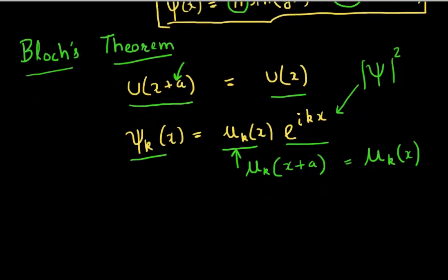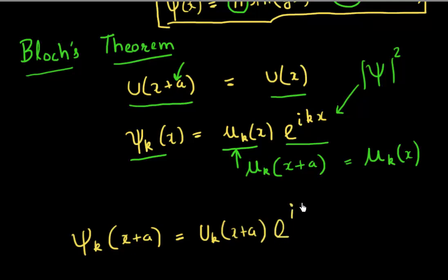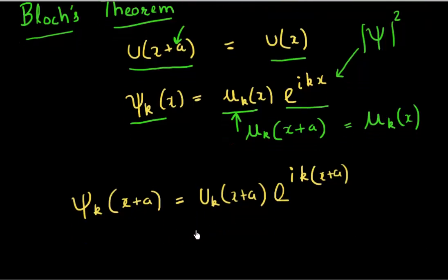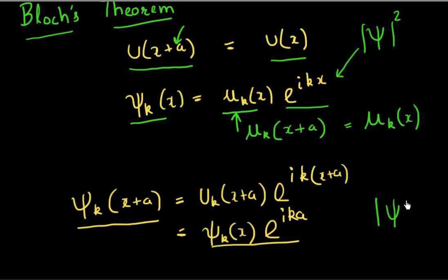Now I see that my ψ_k at a distance of x plus a would be given by u of k of x plus a and e to power i k(x plus a). Since this function has a periodicity of a, I could rearrange this term and essentially what I will get is ψ_k(x) times e to power ika. If I have this kind of functional dependence, what I can see is if I take the probability which is this, I see that my probability is the same at x plus a as it was at my point x.